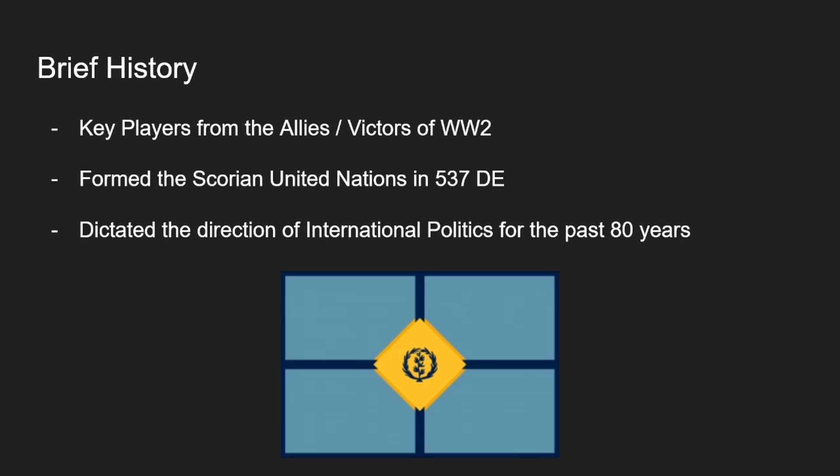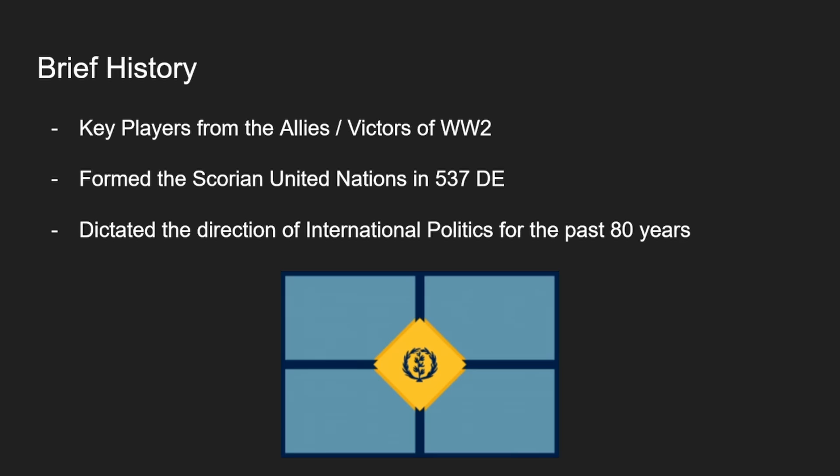The Big Five were formed from the central players within the Allies, one of the two factions of the Second World War. Although one could argue this mutually beneficial alliance dates back further, as we'll see in a second. Together, the Big Five formed the Skritic United Nations in 537 DE, a year following the end of the Second World War. They became permanent members of the Security Council, while the remainder of the Allies they fought with constituted the First Nations of the General Assembly.